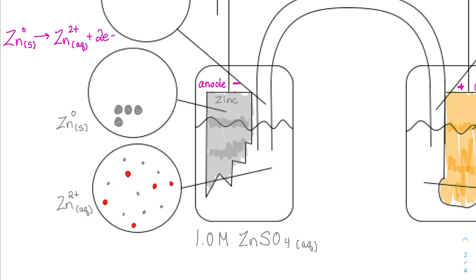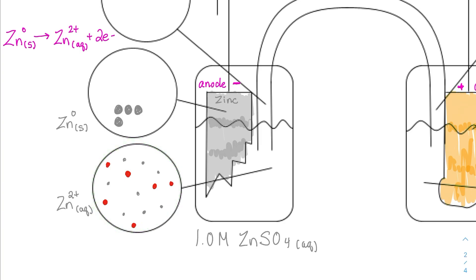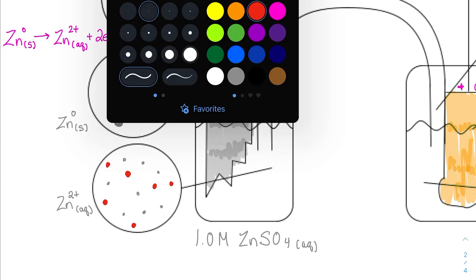Think about the charge in the zinc solution at this point. We have six sulfate ions each with a 2-minus charge — that's 12 minus. And we have eight zinc two-plus ions, giving 16 plus. So the solution is not net neutral at this point. That's where the salt bridge will come into play — but let's first look at what's going on over at the copper side.